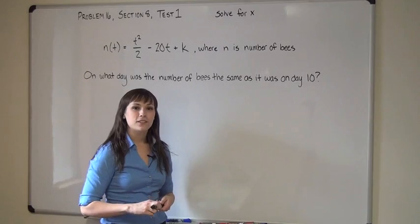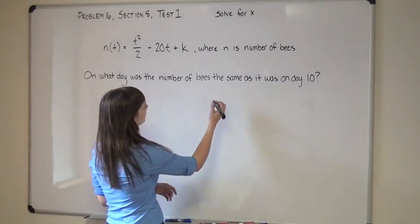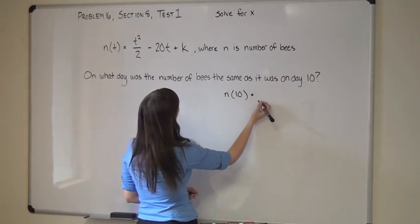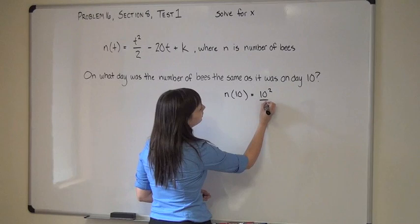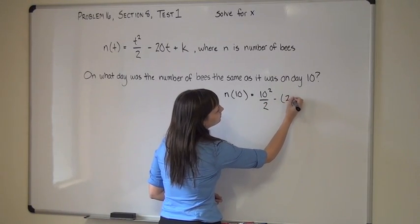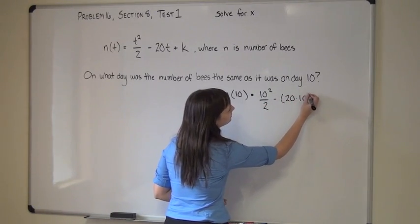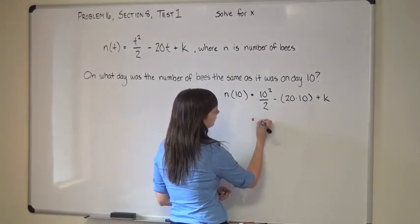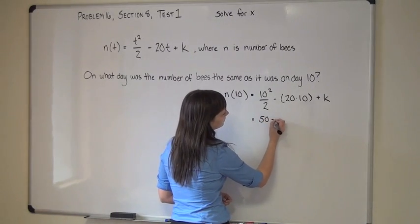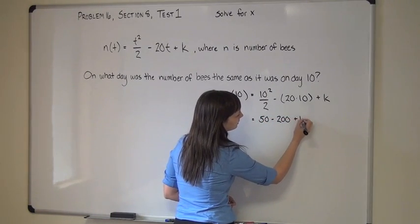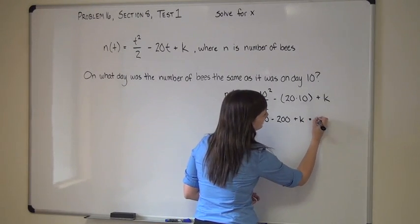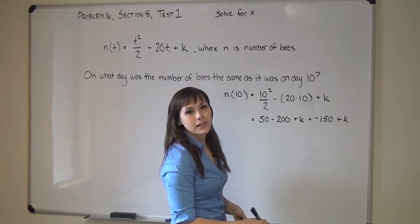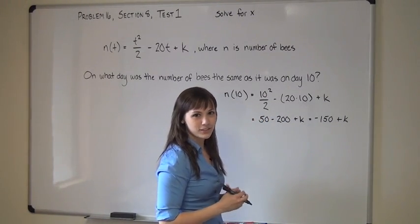We can just sub in 10 for t in the original function and see what we get. So n of 10 is going to be equal to 10 squared over 2 minus 20 times 10 plus k. This will simplify to 50 minus 200 plus k, which is the same thing as negative 150 plus k. Now it might seem a little weird to get a value with k in it, but let's just move forward.